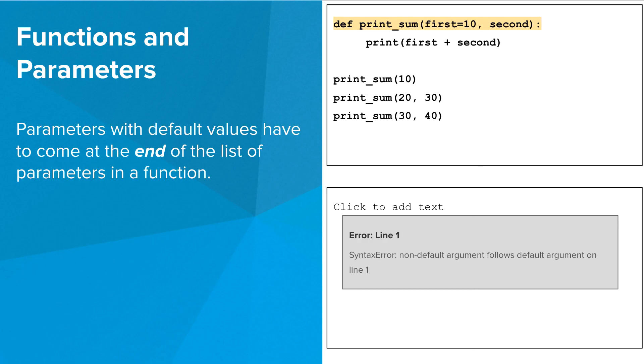Parameters with default values have to come at the end of the list of parameters in a function. The code at the right will not work because the normal parameter second comes after the parameter with the default value first.